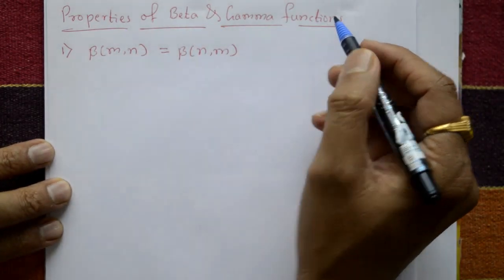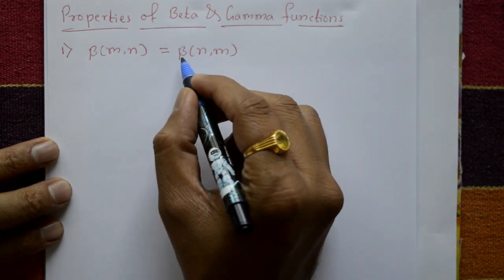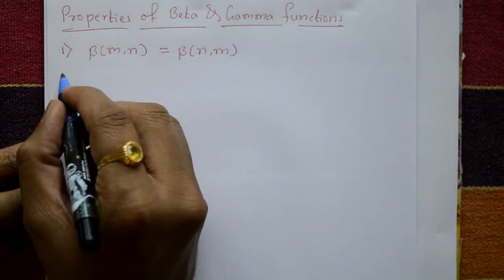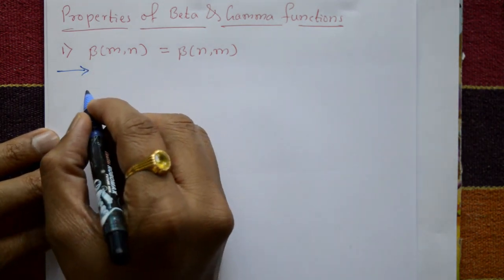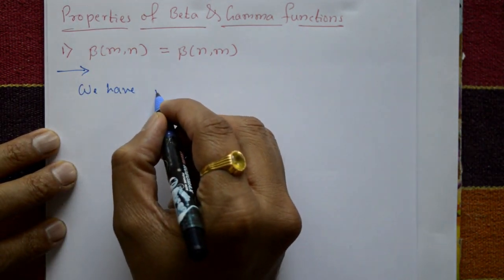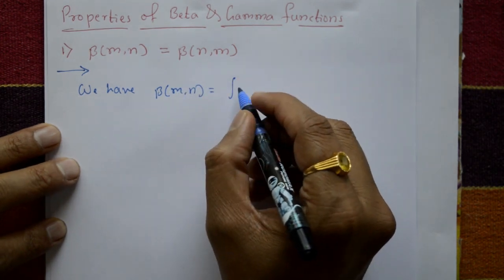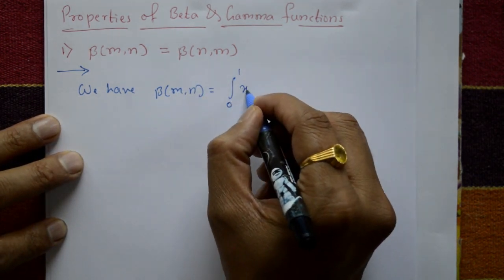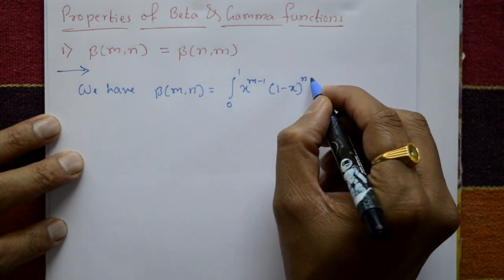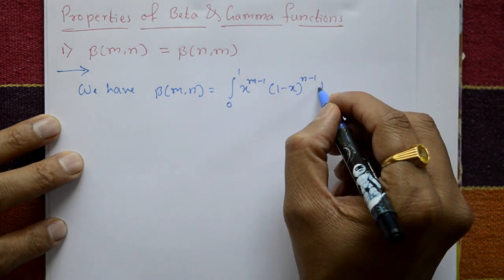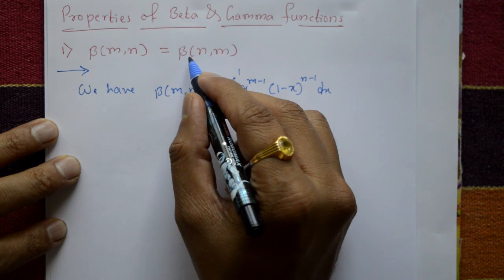Properties of beta and gamma function. The first property is: beta of m,n is equal to beta of n,m. To prove this, we write the definition: beta of m,n is equal to the integration from 0 to 1 of x raised to m minus 1, into 1 minus x raised to n minus 1, dx.